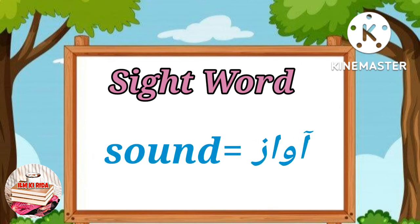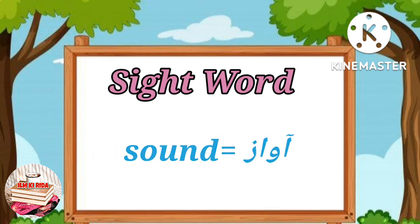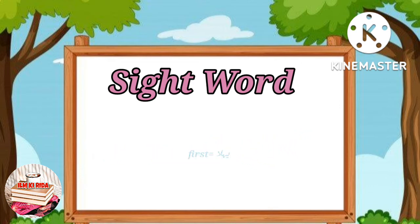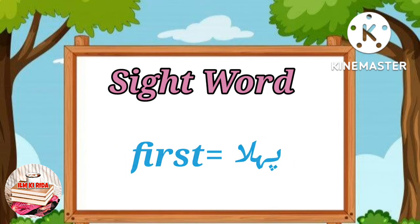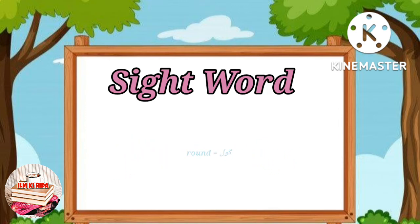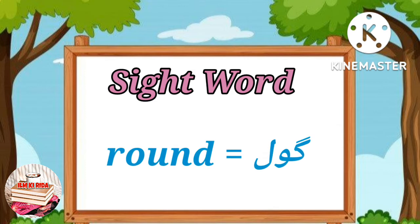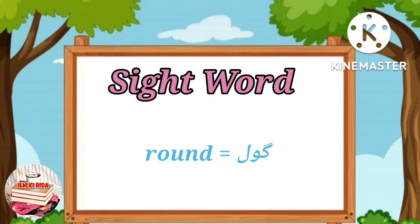Sound - Meaning: आवाज. First - Meaning: पहला. Round - Meaning: गोल.